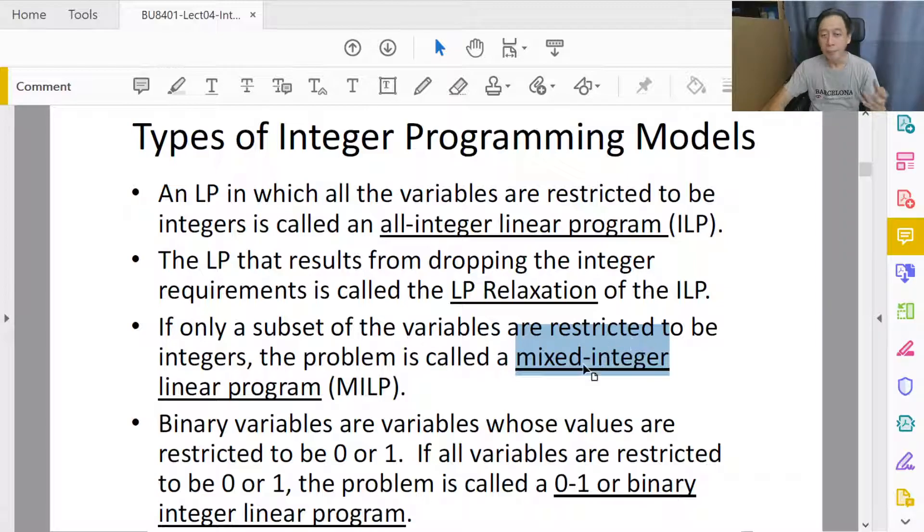If given a mixed-integer or all-integer model, and we drop all requirements for variables to be integer or binary, that modified model is called the LP relaxation. Imagine copying a mixed-integer model and removing all integer or binary constraints - that copied model is the LP relaxation of the original. LP relaxation is a noun referring to this modified version.